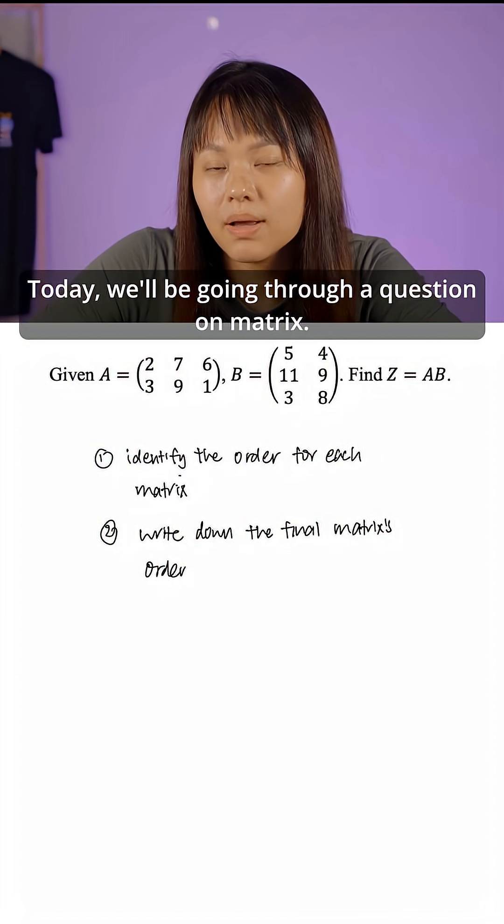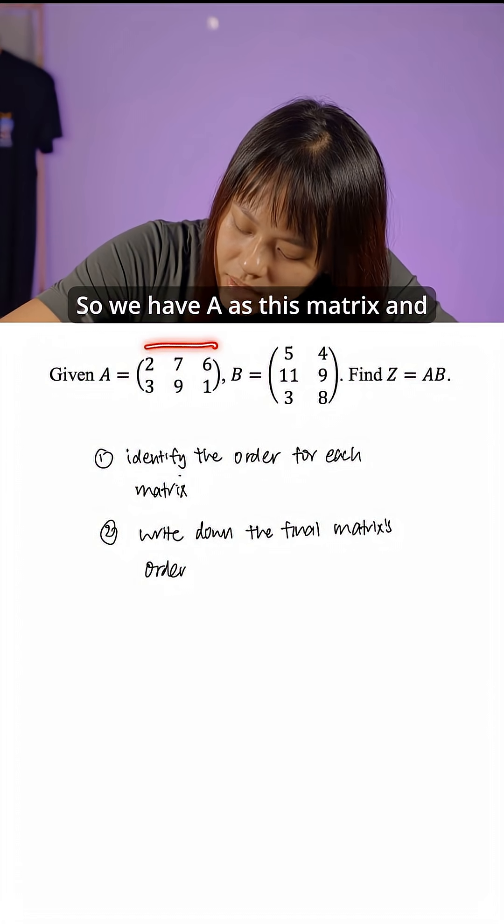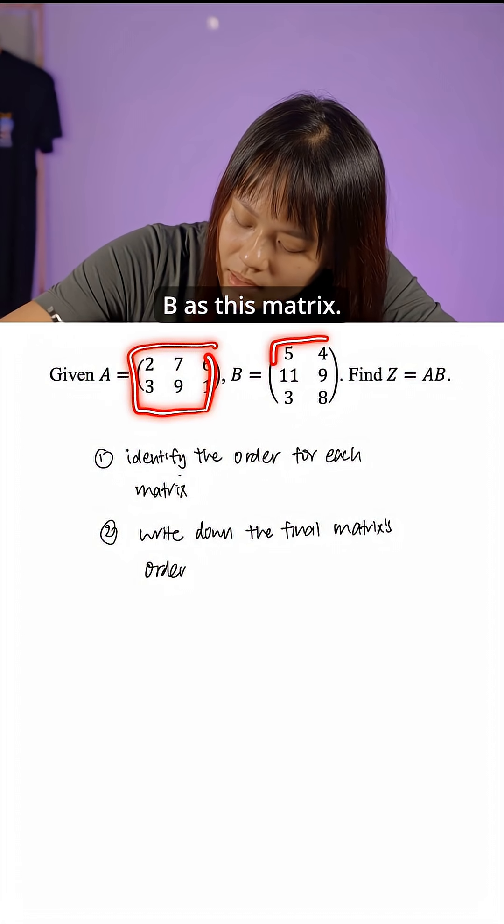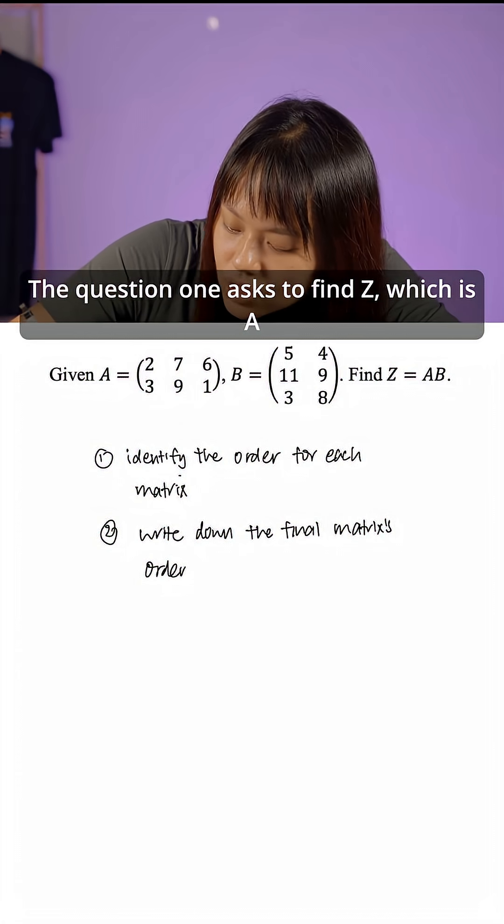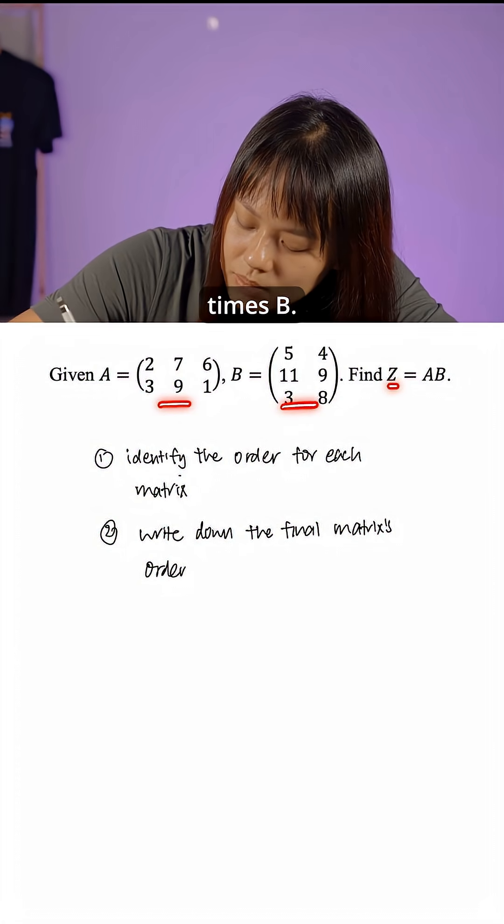Today we'll be going through a question on matrix. So we have A as this matrix and B as this matrix. The question asks to find Z, which is A times B.